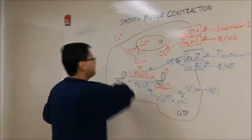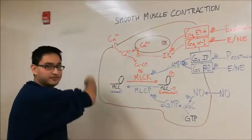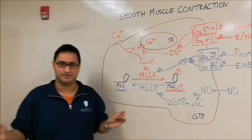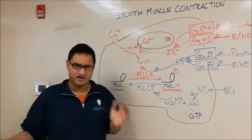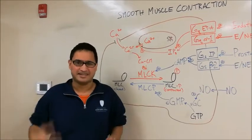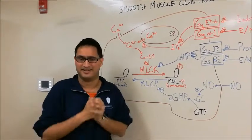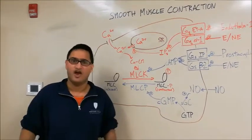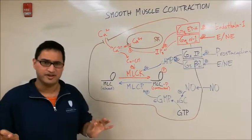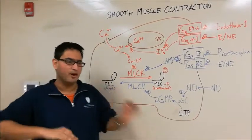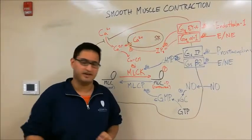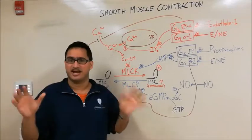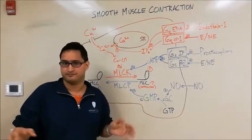Here I've drawn a smooth muscle cell. Now similar to cardiac and skeletal muscle, muscle contraction is all about actin and myosin binding together and interacting. What's different, however, is that there's no troponin and tropomyosin. Smooth muscle is all about myosin light chain kinase and phosphatase.